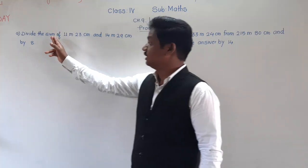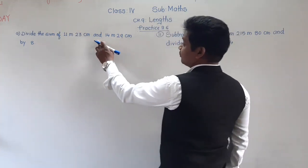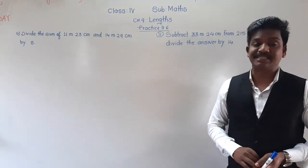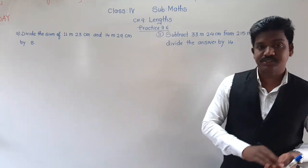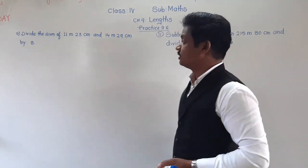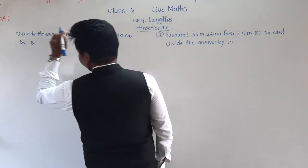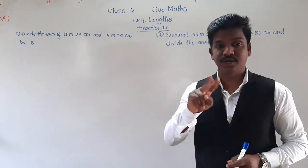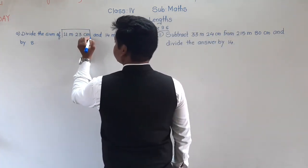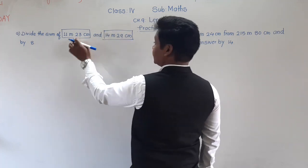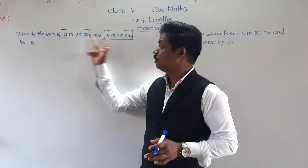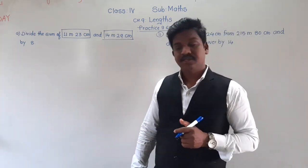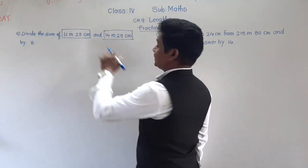See example number 9: divide the sum of 11 meter 23 centimeter and 14 meter 29 centimeter by 8. This type of problem we have seen in the previous Practice 9.5, which was on multiplication. Here we have to divide the sum — the addition of these two lengths: 11 meter 23 centimeter and 14 meter 29 centimeter. We have to find the sum of these two lengths and then divide that sum by 8.